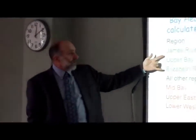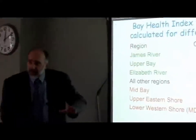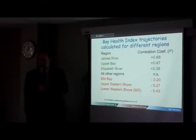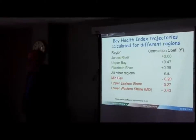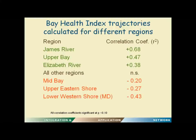For the combined Bay Health Index, we had statistically significant positive correlation coefficients — in other words, getting better — for the James River upper Bay segment and the Elizabeth River in Virginia. We had statistically significant negative trajectories for the Mid-Bay, the Upper Eastern Shore (which I highlighted earlier), and the lower western shore of Maryland: the Severn, the South, the West, and the Magothy. Quite high correlation coefficients as well. Therein lies the issue I want to address in this lecture.